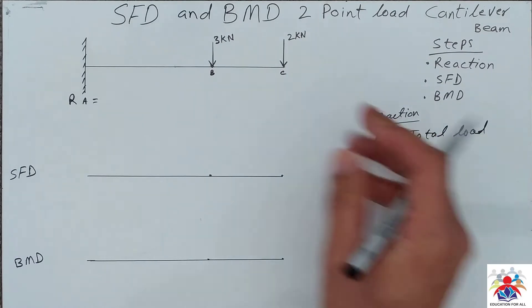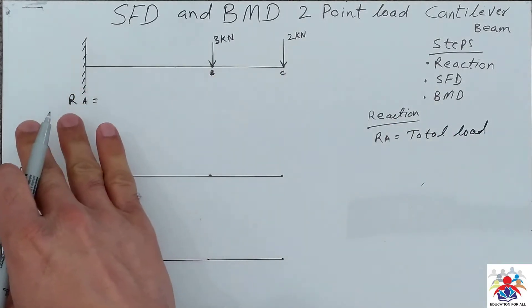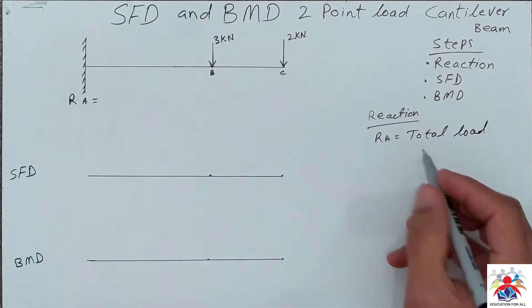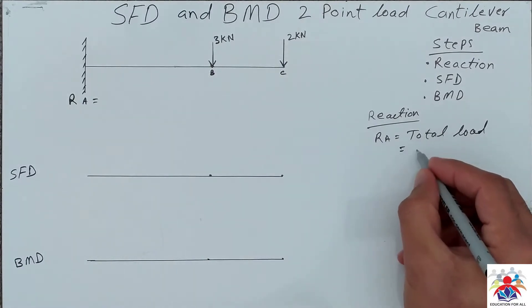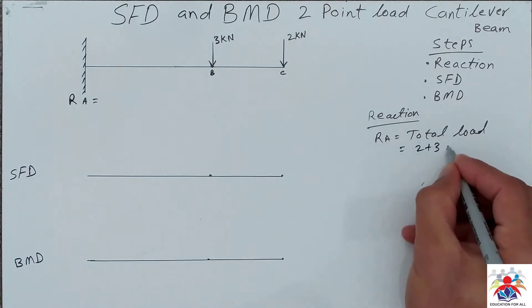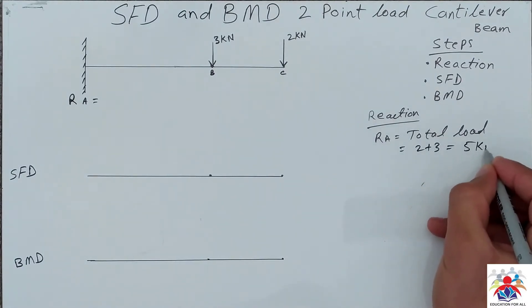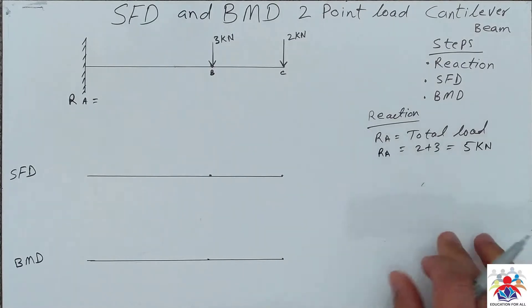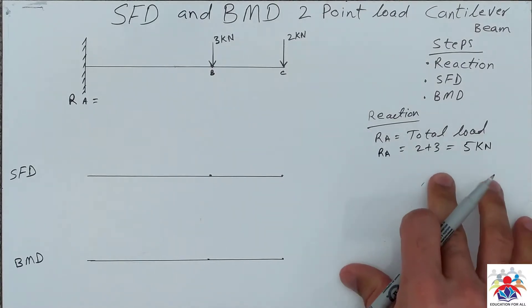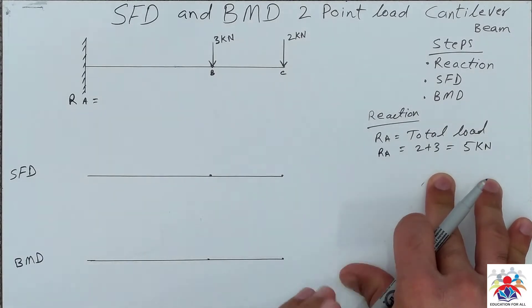Because all the load is acting and supported by one end, it will be 2 plus 3 is equal to 5 kilonewtons at RA.